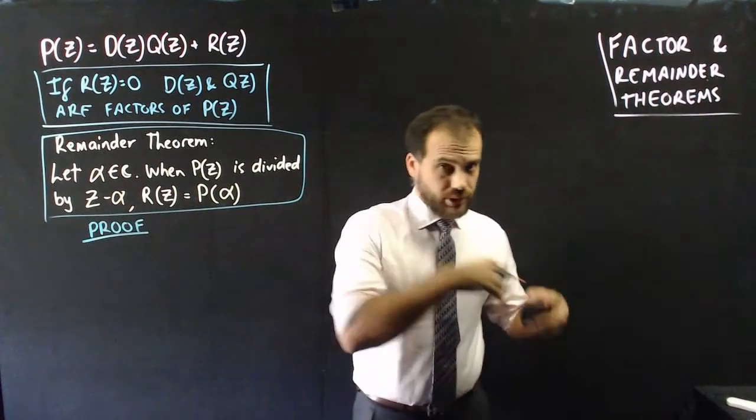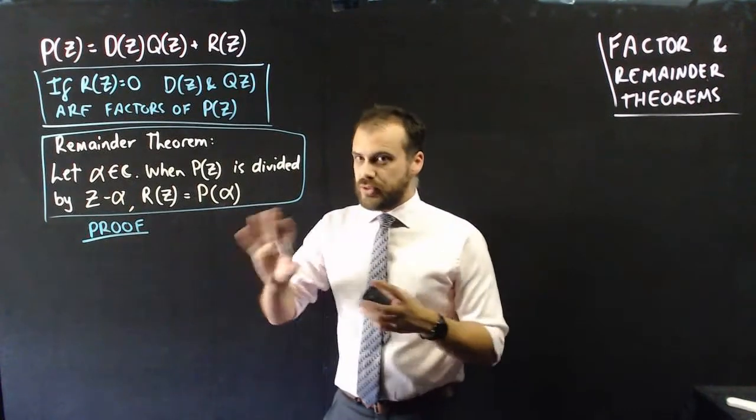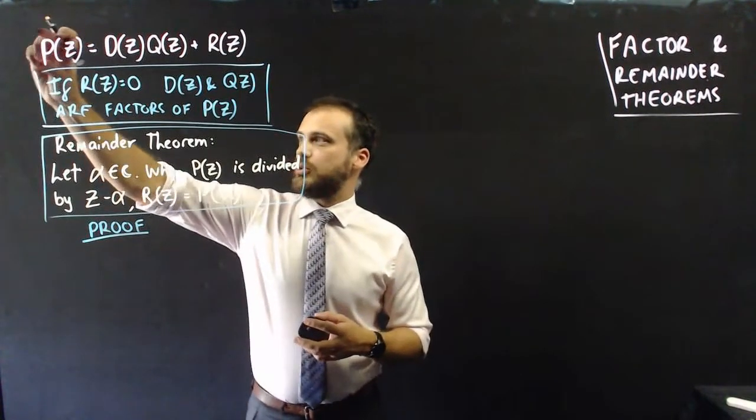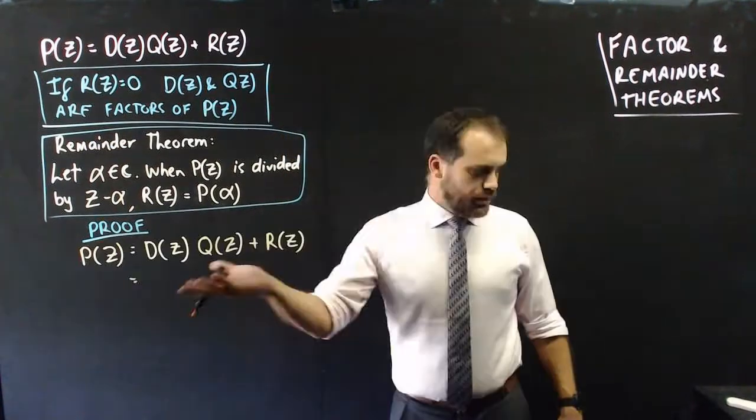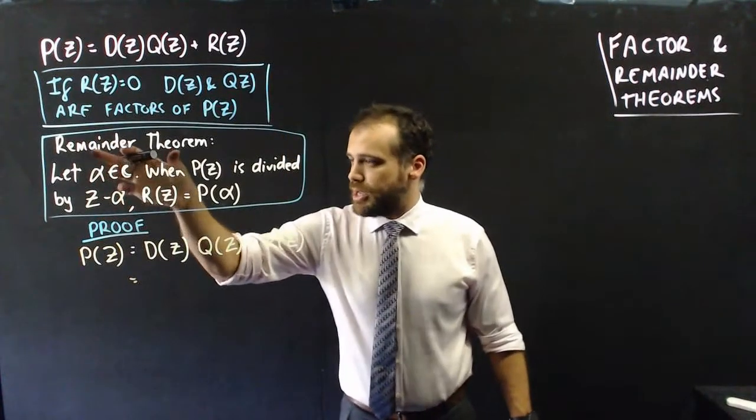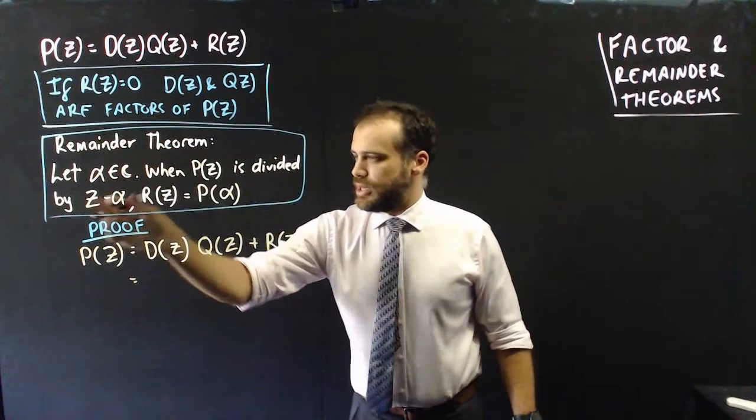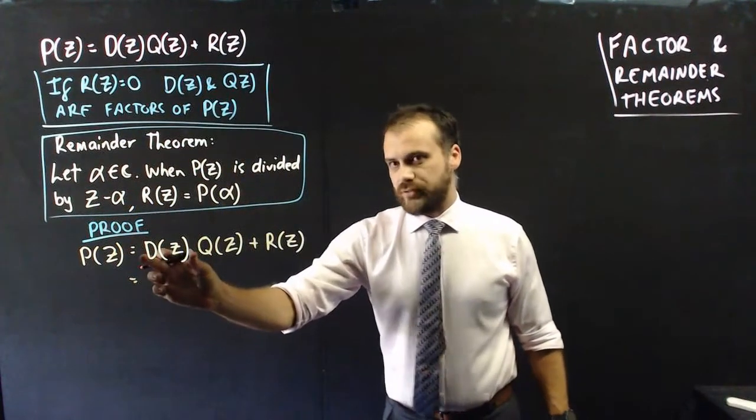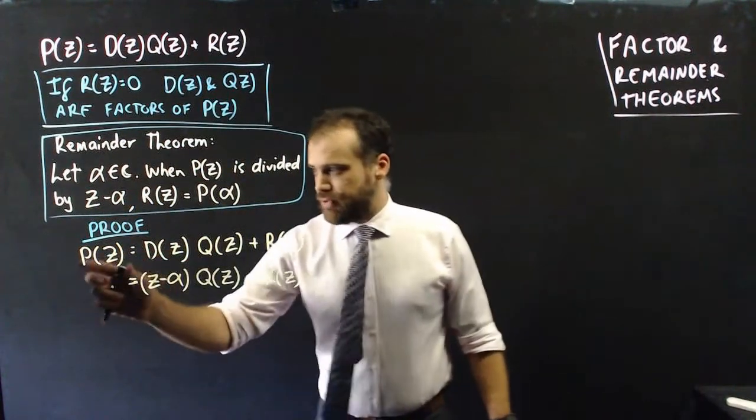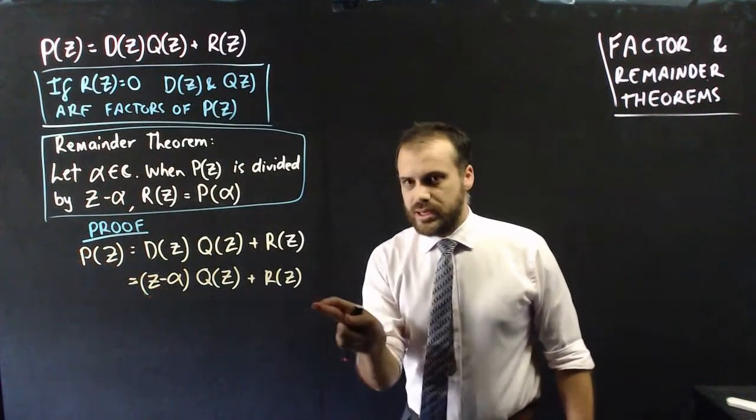That thing was an example. It wasn't proof. If you want proof of the remainder theorem, really straightforward. Take this equation and bring it down here. Now that we've done that, we know in our remainder theorem, we're dividing by z minus alpha. So let's put that in for our divisor. And now what we have is the function P z in this form here.